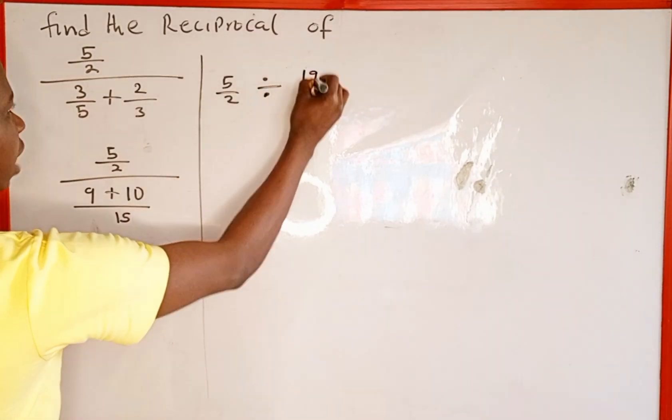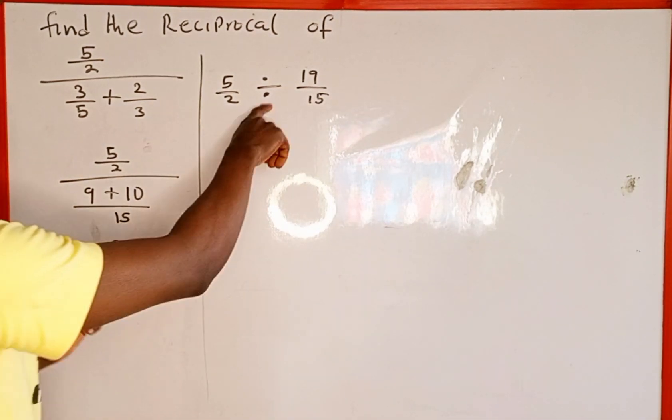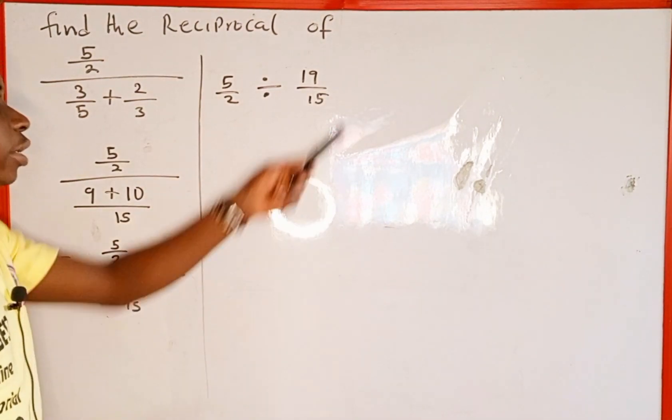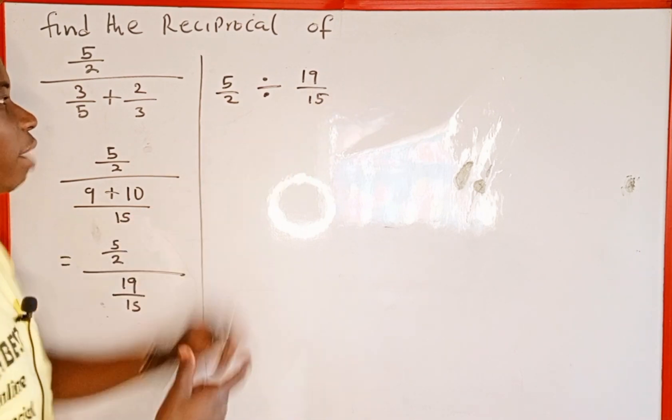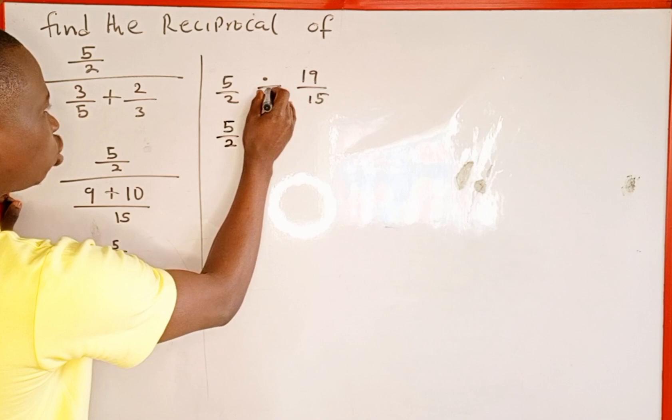And remember in division, we can change this operation to multiplication, then we reciprocate the fraction on the right hand side. This is going to be 5 over 2, and this operation is going to change to multiplication.